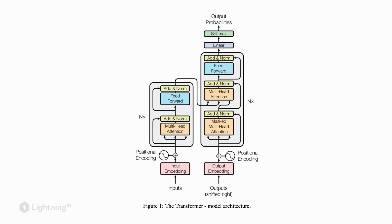For example, in previous units we already talked about the softmax activation function, and we are also already familiar with linear or fully connected layers. Here, feedforward is just a different word for multilayer perceptron — so multiple fully connected layers. And in the previous video we just talked about input encoding, so that's also now a familiar concept.